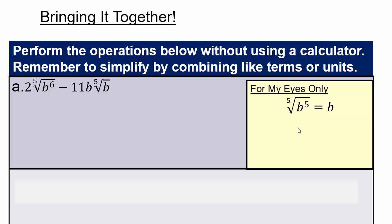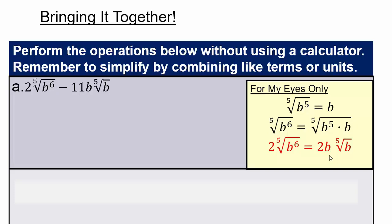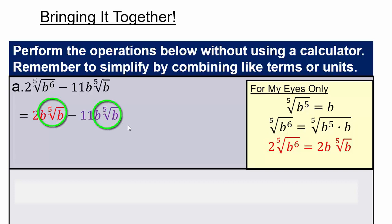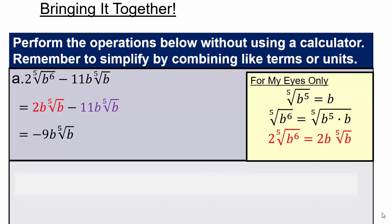But we have fifth root of b to the sixth. That's the same as b to the five times another b. So the fifth root of b to the fifth gives you a b on the outside, and then you'll have a b left on the inside. There's also a two on the outside. So if you simplify this, you'll have 2b times fifth root of b minus 11b times fifth root of b, combining to give you negative 9b fifth root of b. You can see how roots and simplifying with subtraction came together.